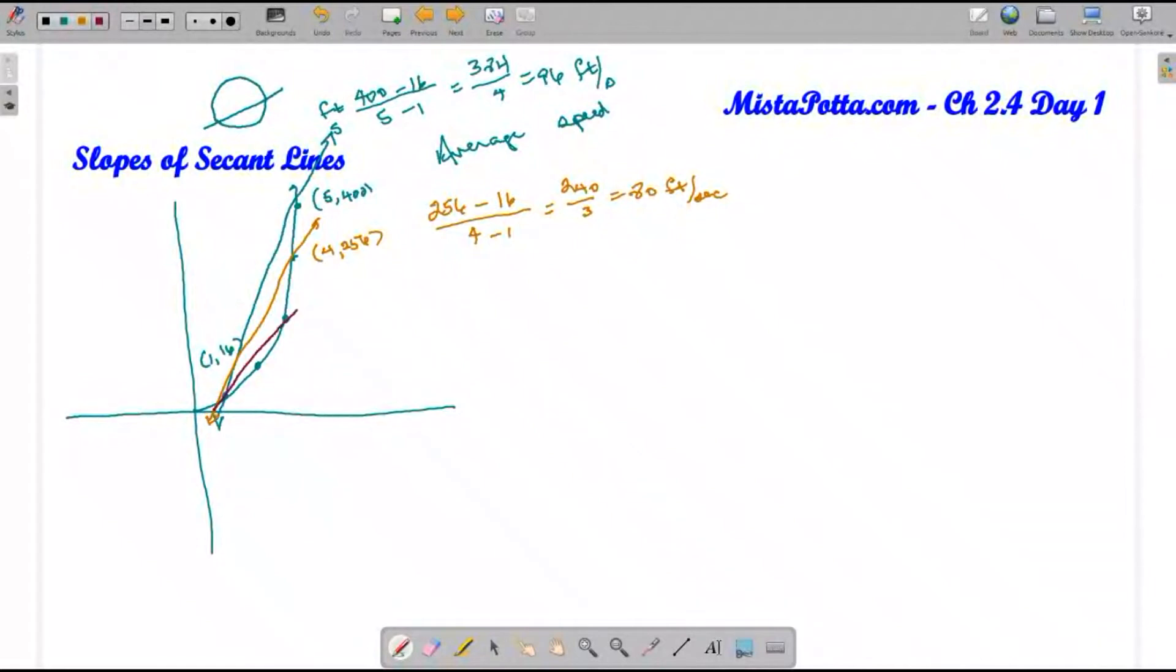If I take a look at the slope between 1,16 and point 3,144, then I'm going to have to do 144 minus 16 over 3 minus 1, which gives me 128 divided by 2, which is 64 feet per second. I can continue this. Each time I draw the secant line, I'm getting a shallower and shallower line, so my slope should be decreasing.